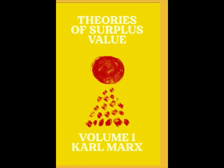Productive and unproductive labor is here throughout conceived from the standpoint of the possessor of money, from the standpoint of the capitalist, not from that of the workman. An actor, for example, or even a clown, according to this definition, is a productive laborer if he works in the service of a capitalist entrepreneur, to whom he returns more labor than he receives from him in the form of wages, while a jobbing tailor who comes to the capitalist house and patches his trousers for him, producing a mere use-value, is an unproductive laborer. The former's labor is exchanged with capital, the latter's with revenue. The former's labor produces a surplus value; in the latter's, revenue is consumed. A writer is a productive laborer not insofar as he produces ideas, but insofar as he enriches the publisher who publishes his works, or if he is a wage laborer for a capitalist. The material characteristics are in no way linked with its nature, which, on the contrary, is only the expression of a definite social relation of production. It is a definition of labor which is derived not from its content or its result, but from its particular social form.